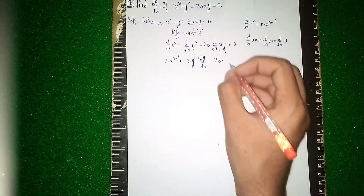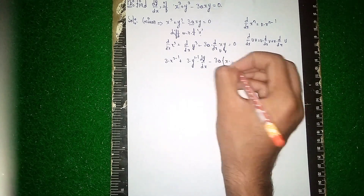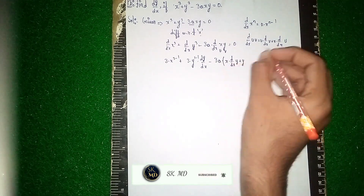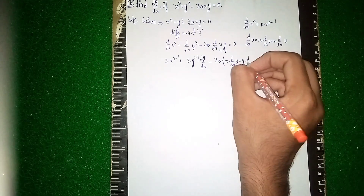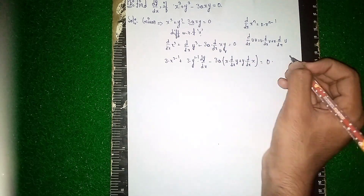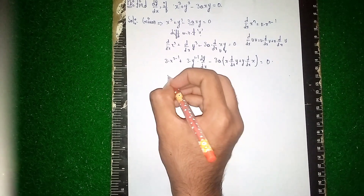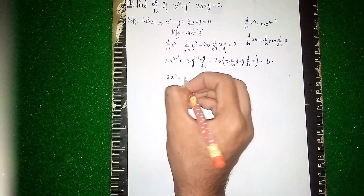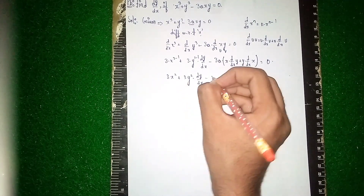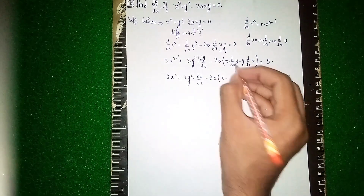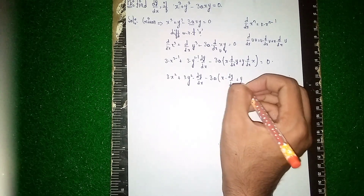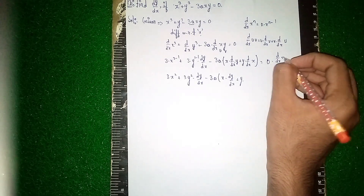Substituting the values: u is x and v is y. So it becomes x · dy/dx of y, which is dy/dx, plus y · d/dx of x, which equals 1. So the product rule term gives x · dy/dx + y · 1.